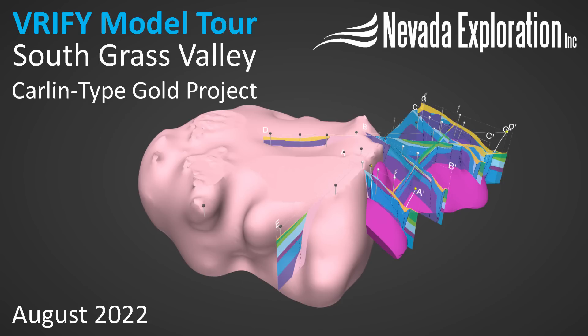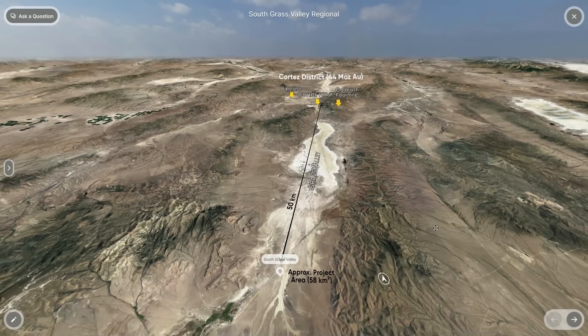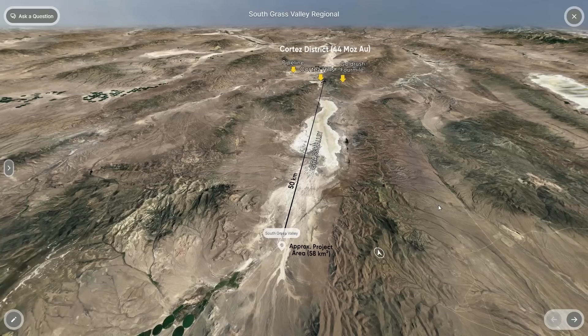Hello, I'm James Buscard, CEO of Nevada Exploration, and today we're pleased to present an updated geologic model from our South Grass Valley Carlin Type Gold Project, situated within the larger Grass Valley south of Nevada Gold Mines Cortez Complex.